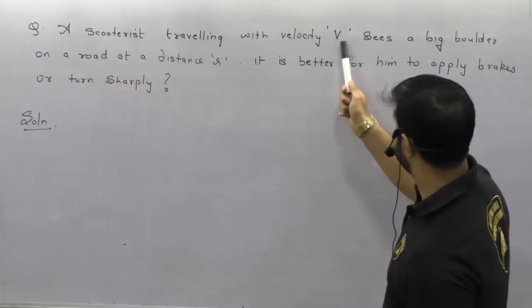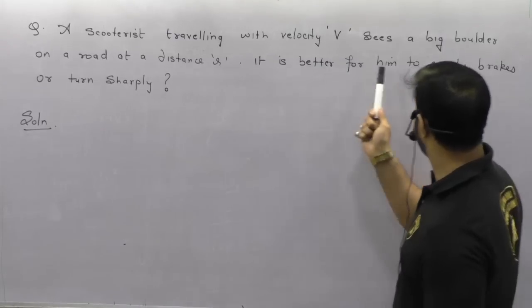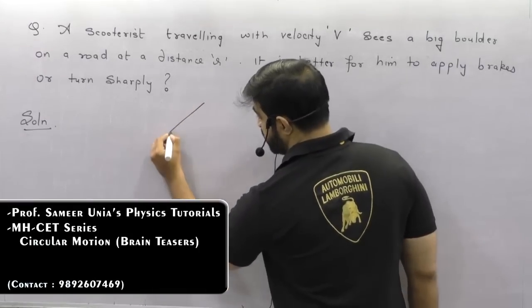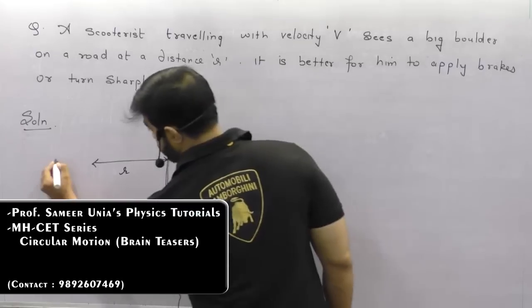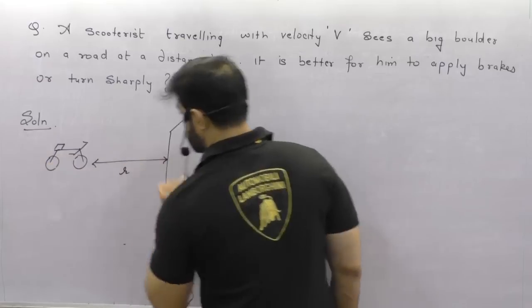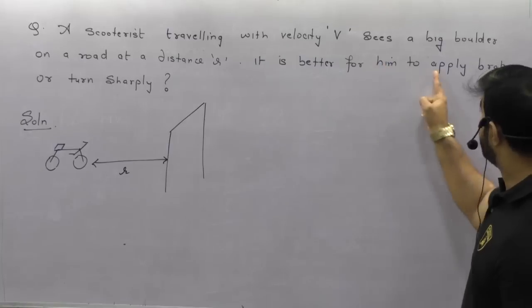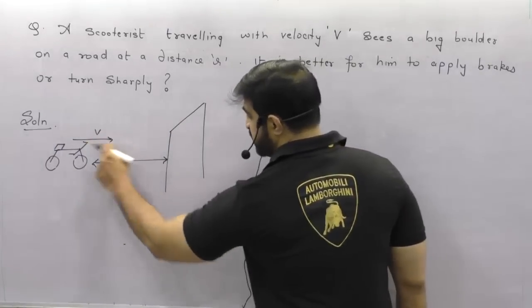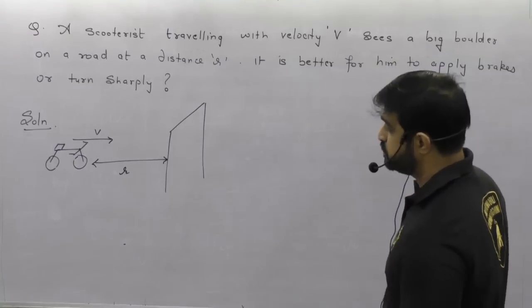Next question: a scooter is travelling with velocity V and sees a big boulder on the road at a distance R. Is it better to apply brakes or to turn sharply? There is a big wall at a distance R from the scooter. They have asked: is it better to apply brakes or to turn sharply, given the scooter is going with velocity V?